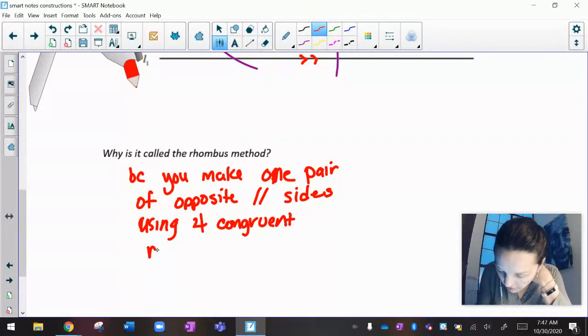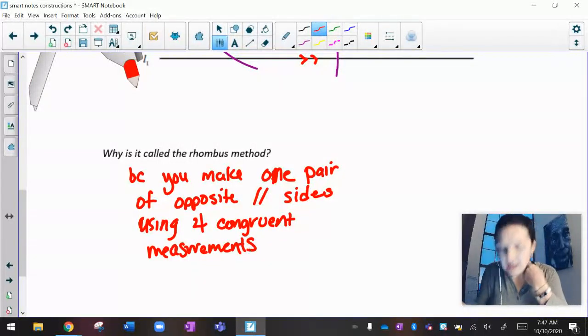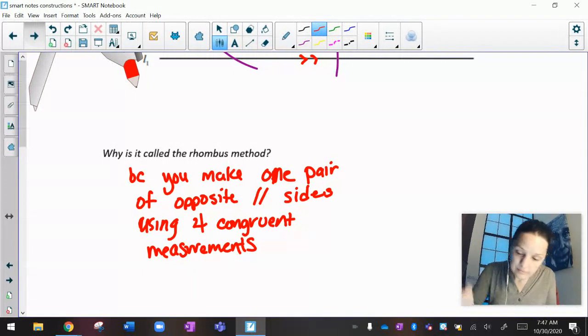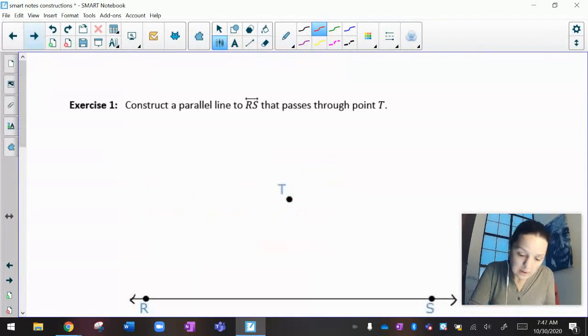Why is it called the rhombus method? Because you make one pair of opposite parallel sides using four congruent measurements. I got to be honest, I'm never going to ask you that kind of question on a quiz, but I want you to understand what's going on. Because we never moved our compass setting, we are technically making a rhombus because we're using the same compass setting over and over again. That's the rhombus method.